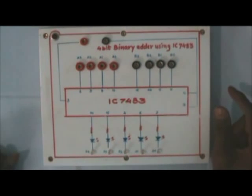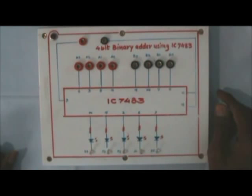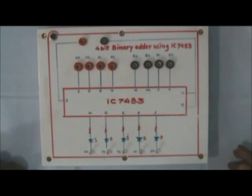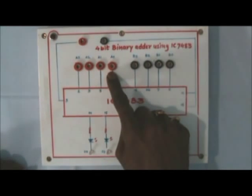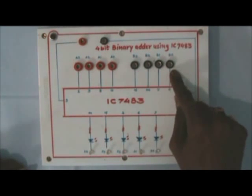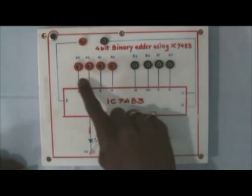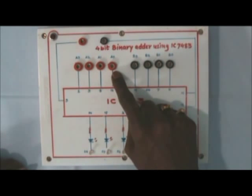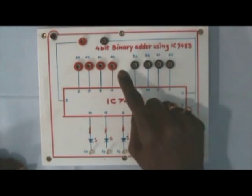These are the two power supply terminals: red positive, black negative. These are the binary inputs of group A, and these are the binary inputs for group B. There are 4 inputs in each group.